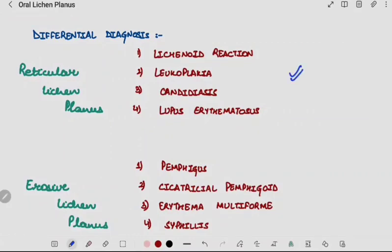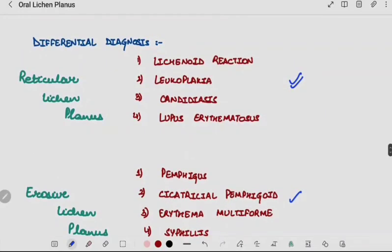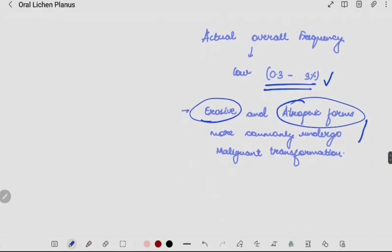Differential diagnosis of oral lichen planus: the oral lesion may superficially resemble reticular lichen planus, including lichenoid reaction, leukoplakia, candidiasis, and lupus erythematosus. The erosive type may resemble pemphigus, cicatricial pemphigoid, erythema multiforme, syphilis, and recurrent aphthae. Regarding malignant transformation, lichen planus is a pre-malignant condition, but the actual overall frequency of transforming into oral squamous cell carcinoma is very low, 0.3 to 3 percent. Mainly erosive and atrophic forms most commonly undergo malignant transformation.